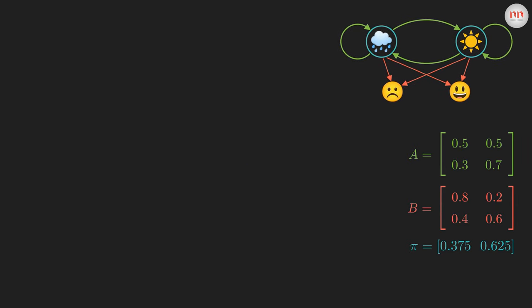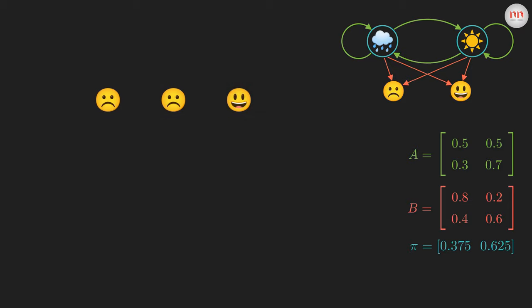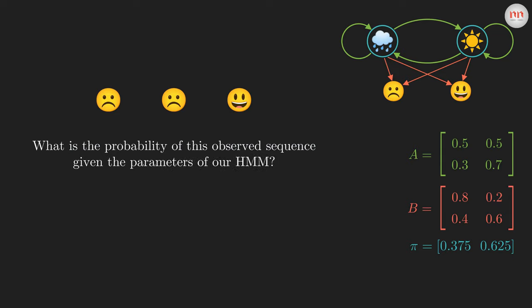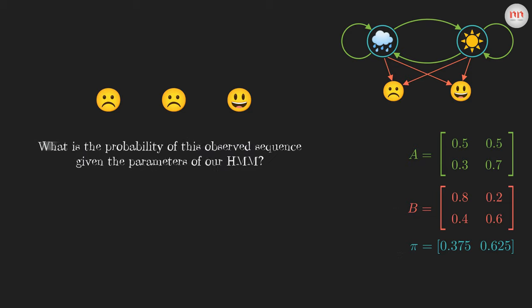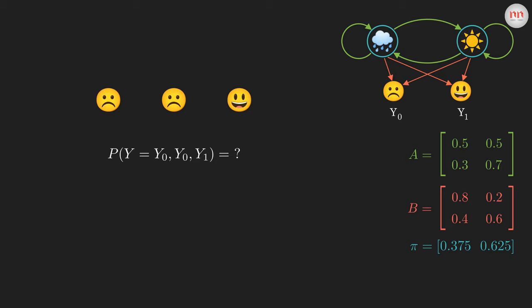First of all, you should know where the forward algorithm is needed. Suppose we have an observed mood sequence like this. On the first two days, Jack was sad, but on the third day he was happy. We want to know what is the probability of occurrence of this particular sequence, given that we know the parameters of our hidden Markov model. The parameters are nothing but the transition matrix, emission matrix, and the stationary distribution. Mathematically, we will write this, where Y0 denotes sad mood and Y1 denotes happy mood.